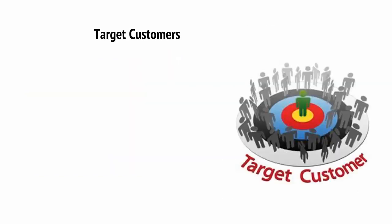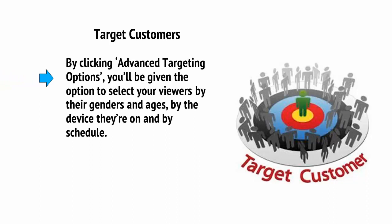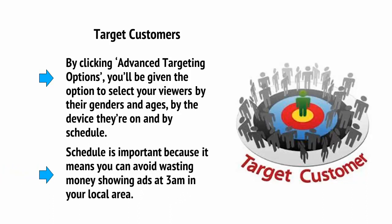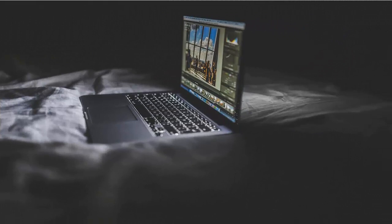Targeting allows you to specifically target the type of person you want for your ads even more. By clicking Advanced Targeting Options, you'll be given the option to select your viewers by their genders and ages — based on their Microsoft accounts — by the device they're on (perhaps if you're selling an app you might want to target mobile devices), and by schedule. Schedule is important because it means you can avoid wasting money showing ads at 3am in your local area. It also means you can get even sneakier and, for example, show ads only later in the evening. As it gets later and we become more tired, we actually become more impulsive and thus more likely to click buy on an advert.